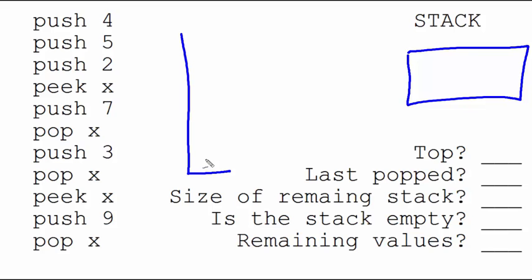So when we push a 4, the 4 goes on the bottom. Push 5, push 2. Now, when we peek x, we just look at the 2, and we're going to output it, but we're not going to remove it.